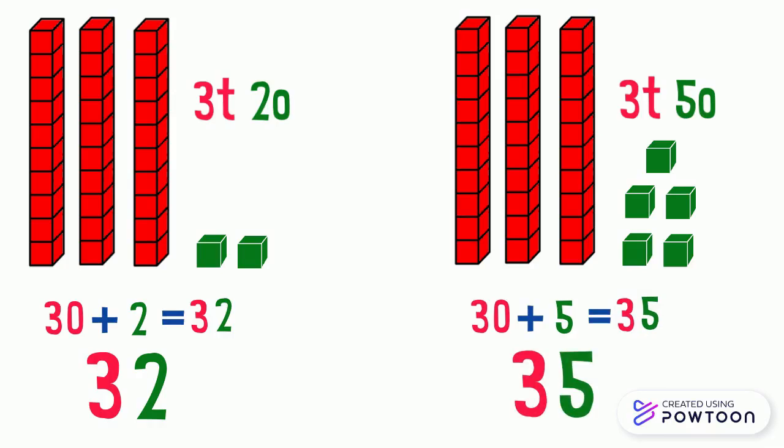Now we want to compare 32 and 35. Since both numbers have the same tens digit, that is 3, we compare the ones digits.